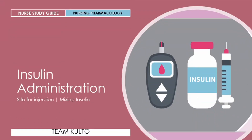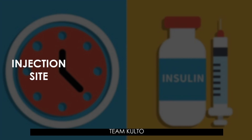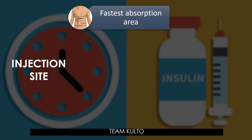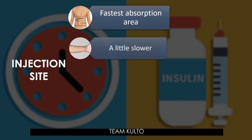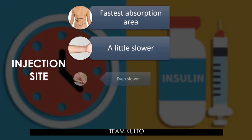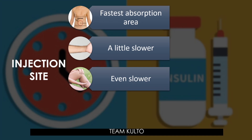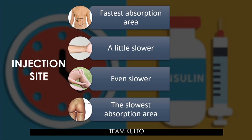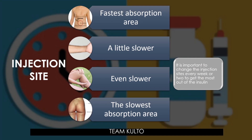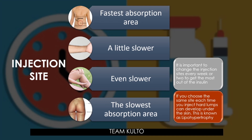On the following slides, we're going to discuss the site of injection and how to mix your insulin. For the injection site, you can administer insulin in different parts of the body. The abdomen is the fastest area of absorption, the arm is a little bit slower, the legs are even slower, and the buttocks is the slowest absorption area. It is very important to change injection sites every week or two. If you choose the same site each time, hard lumps can develop under the skin — known as lipohypertrophy.